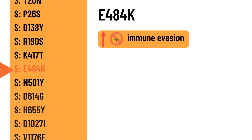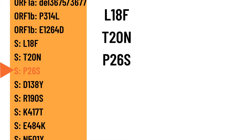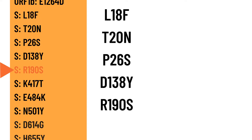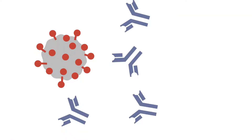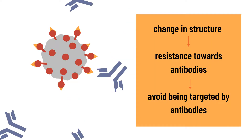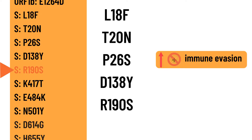Other mutations in the gamma variant include the L18F, T20N, P26S, D138Y, and R190S mutations with amino acid substitutions as listed. These mutations contribute to the viral resistance towards different antibodies due to changes in their structure. The accumulation of these mutations at the spike protein increases the ability of the gamma variant to avoid being targeted by antibodies, leading to a high degree of immune evasion, especially when many antibodies specifically target the K417 or E484 amino acids on the spike protein.